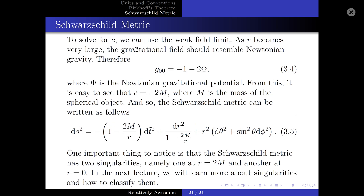To solve for C, we can use a boundary condition known as the weak field limit. As R becomes very large, the gravitational field should resemble Newtonian gravity. Therefore, G-00 is equal to minus 1 minus 2 phi, where phi is the Newtonian potential. From this, it is easy to see that C is equal to minus 2m, where m is the mass of the spherical object. And so, the Schwarzschild metric can be written in its final form.